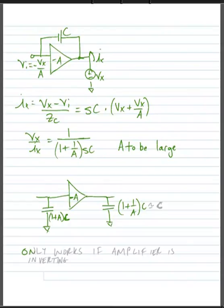Now a couple of things to note. This only works if the amplifier is inverting. So a Miller capacitance is a capacitance that's specifically across an inverting gain stage. And if the gain is very large, then we can treat this output capacitance as approximately equal to the original capacitance.